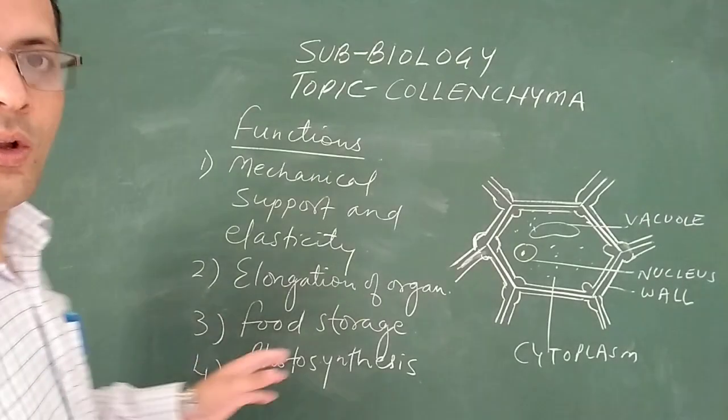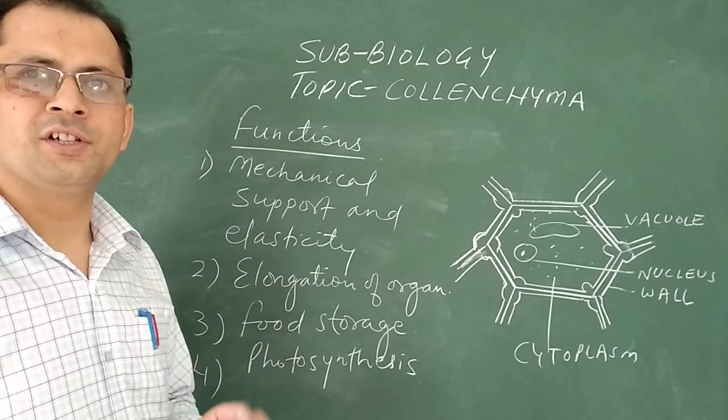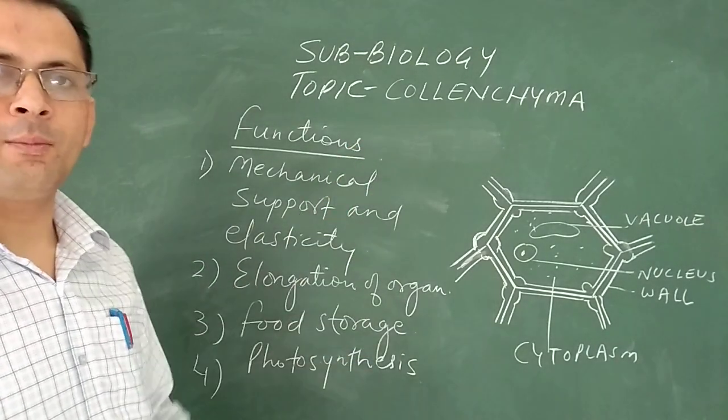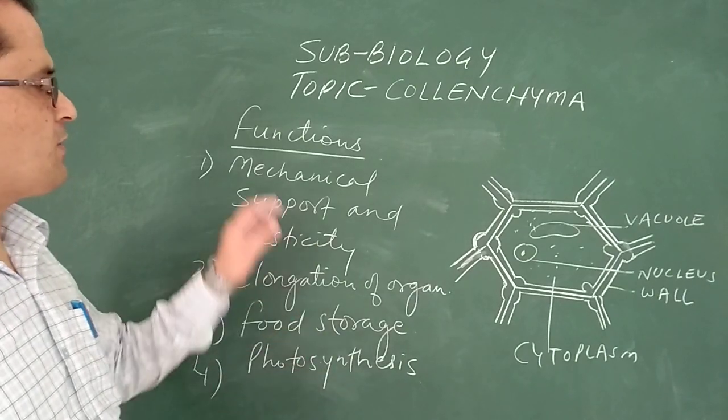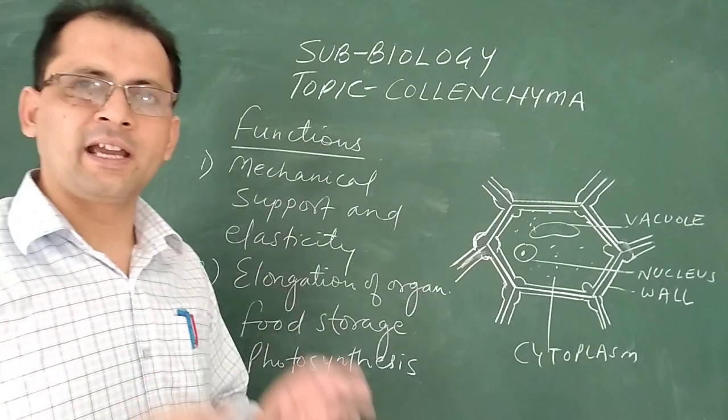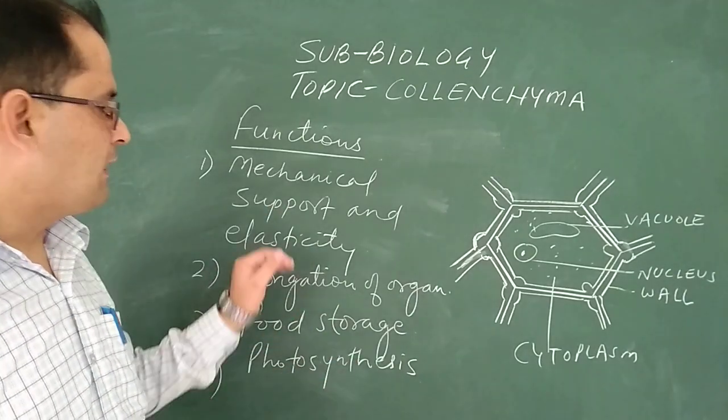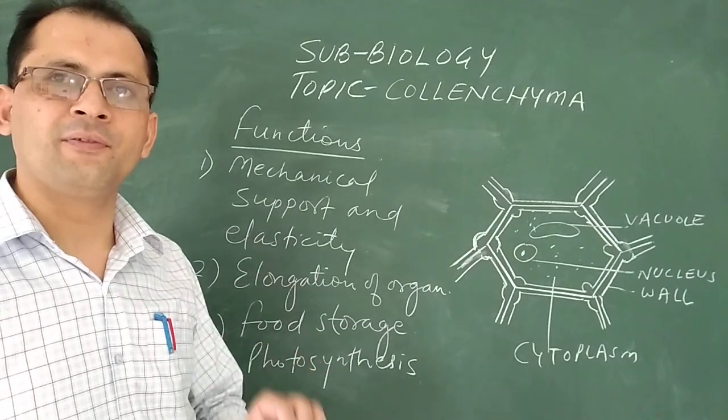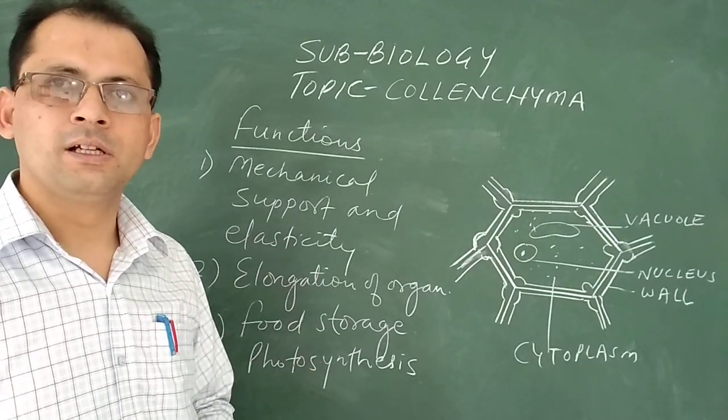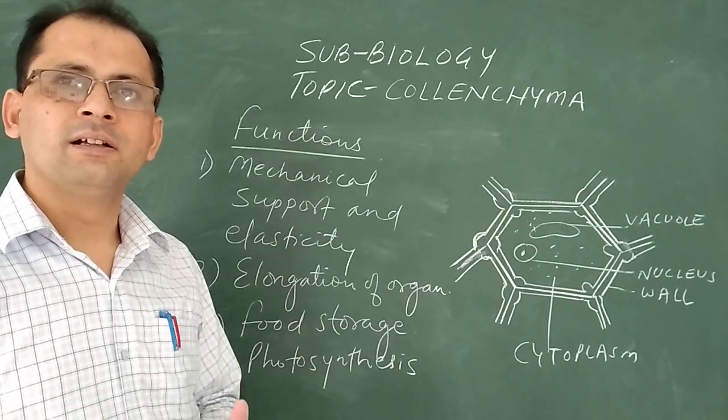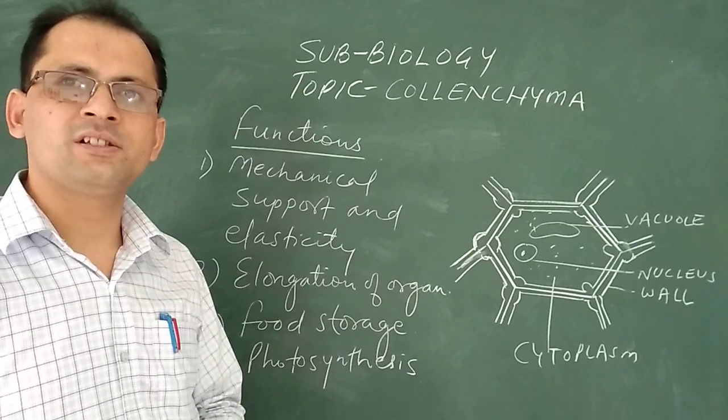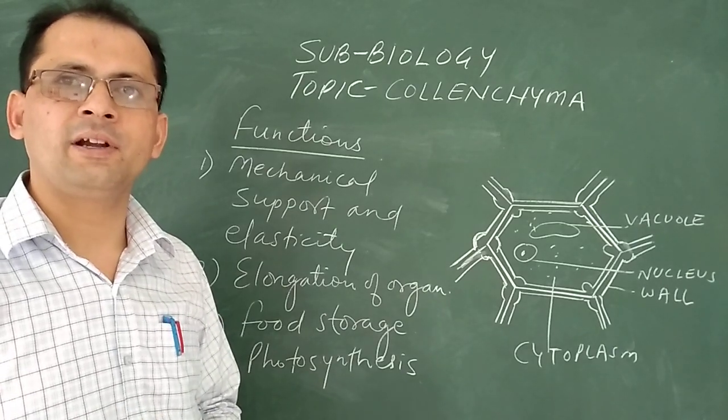Yes, now when we talk about the functions which are performed by the collenchyma tissue, you can see the first function is it is giving mechanical support as well as elasticity to the different parts of the plant. So mechanical strength means the plant is able to withstand various harsh climatic conditions.